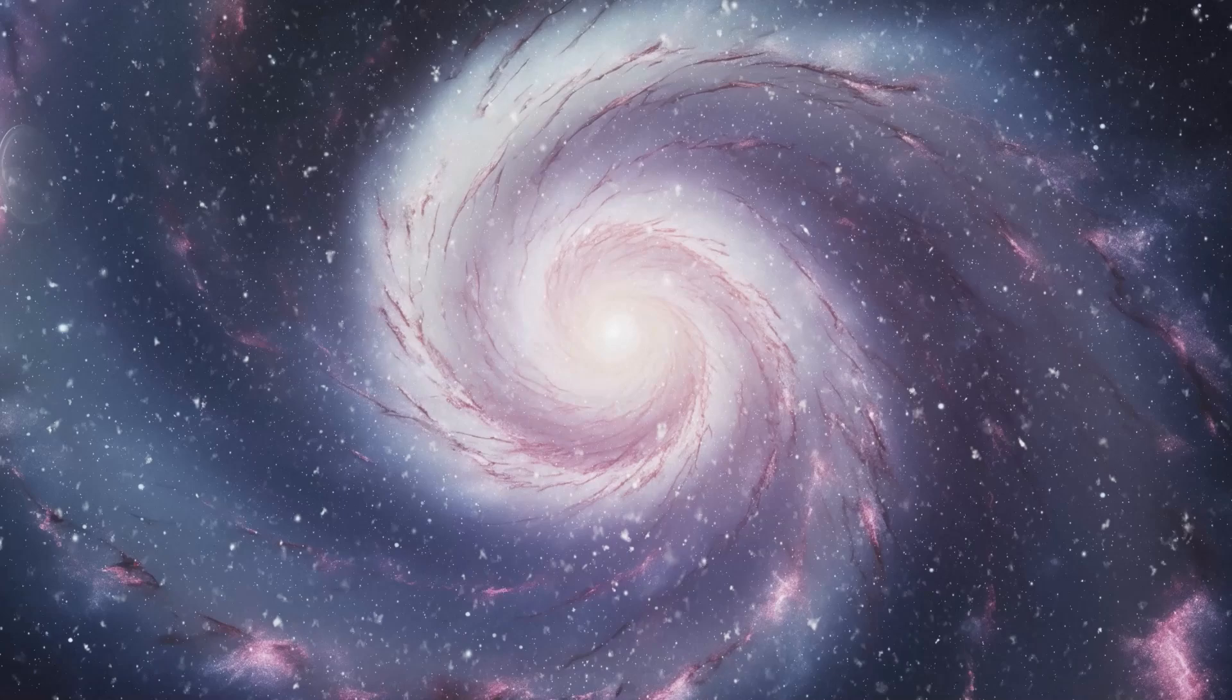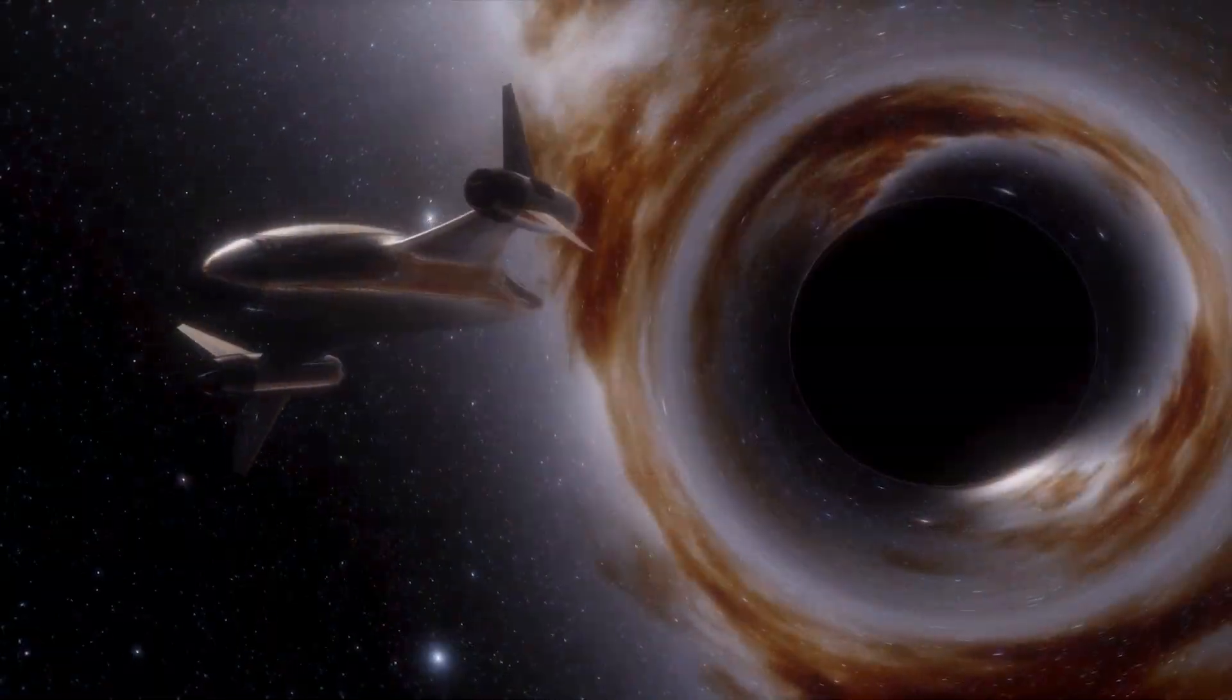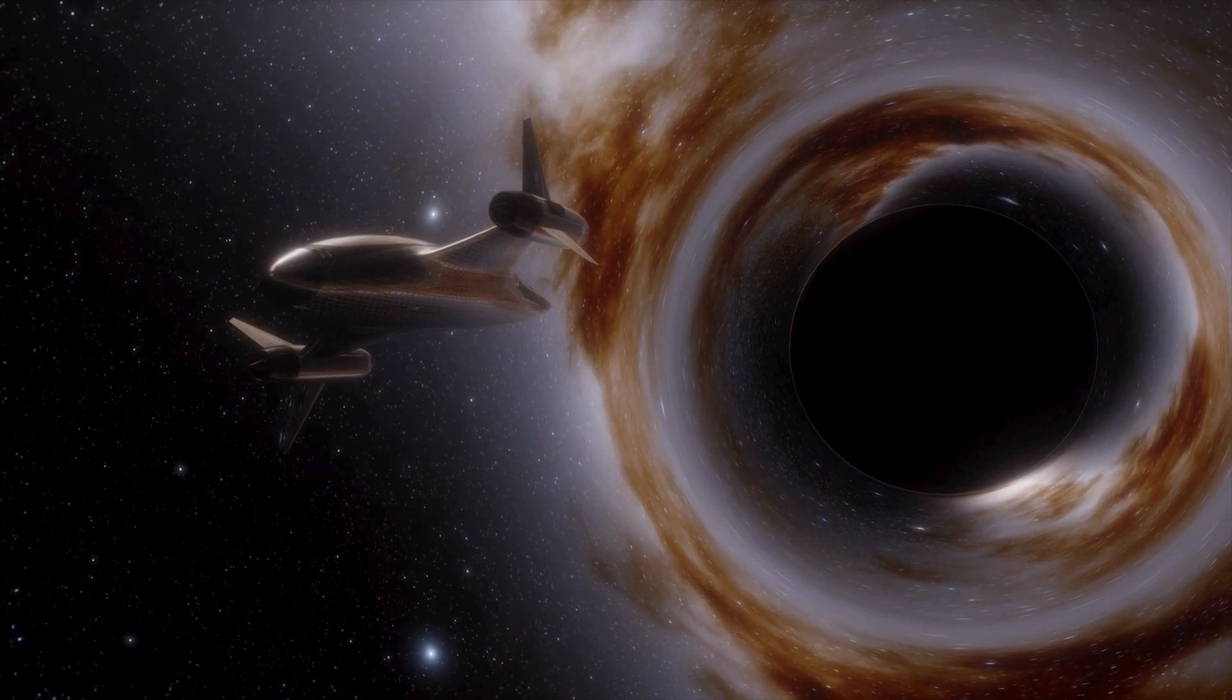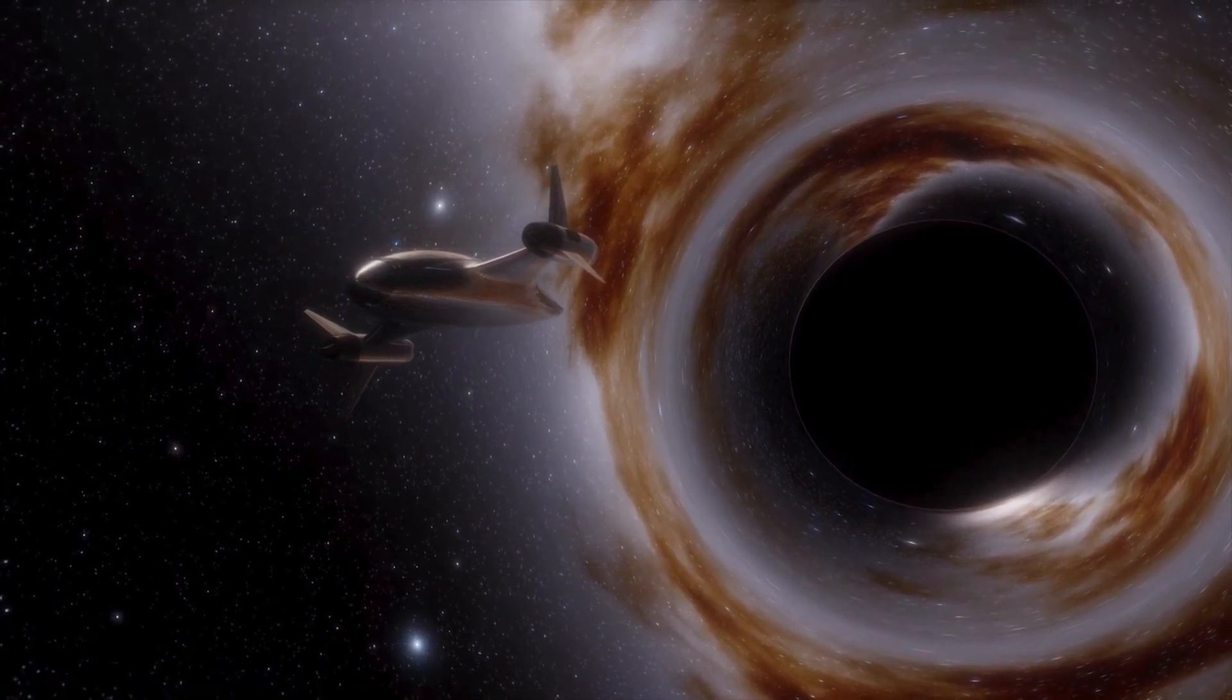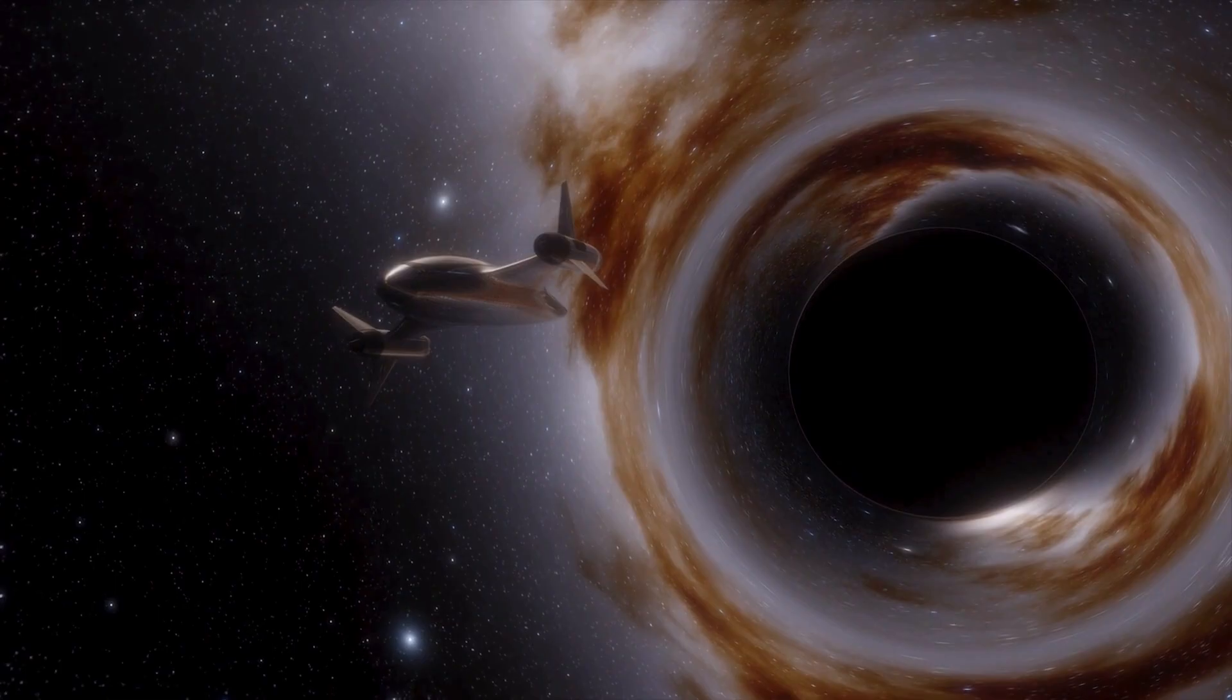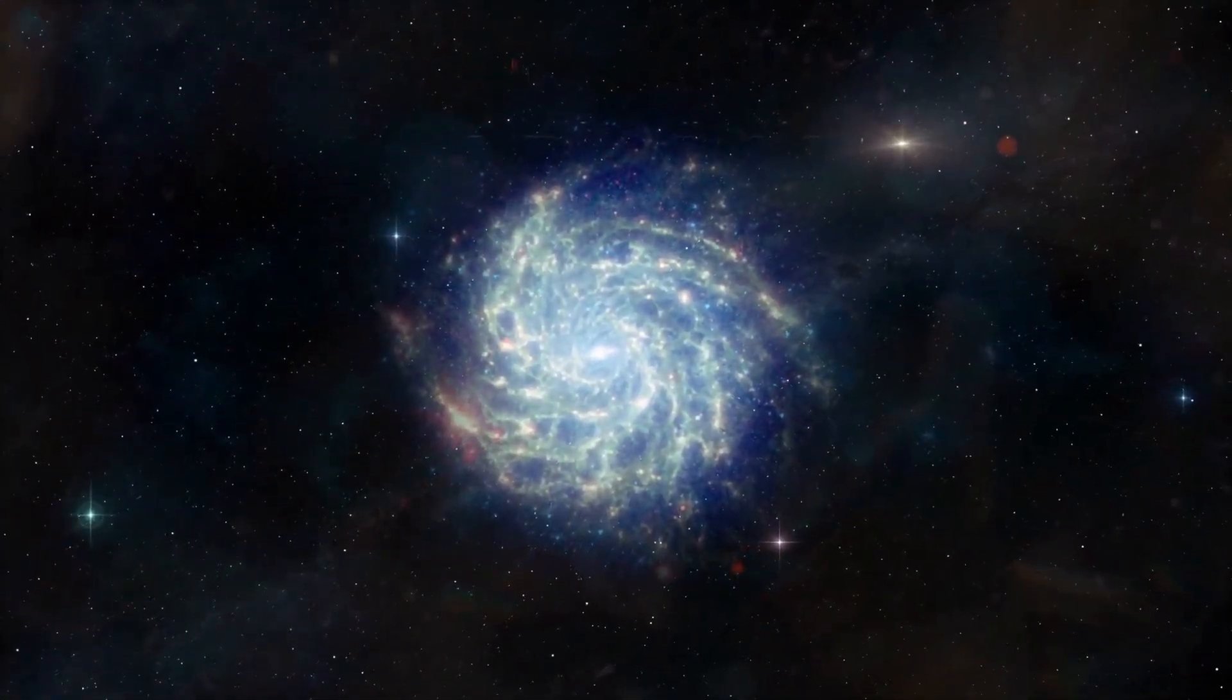Hawking's theory, known as Hawking radiation, suggests that black holes can emit a faint thermal radiation due to quantum mechanical effects near the event horizon. This radiation, he proposed, would slowly drain energy from the black hole over vast periods.